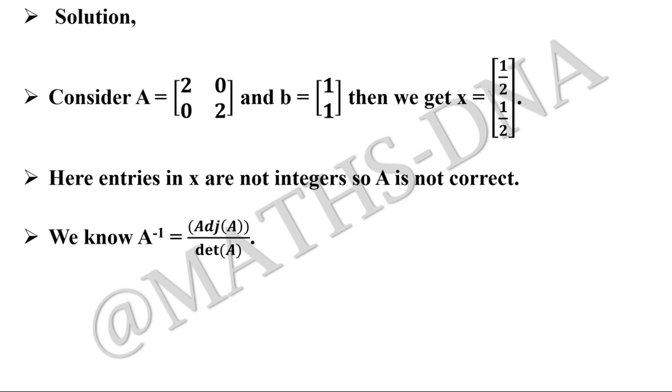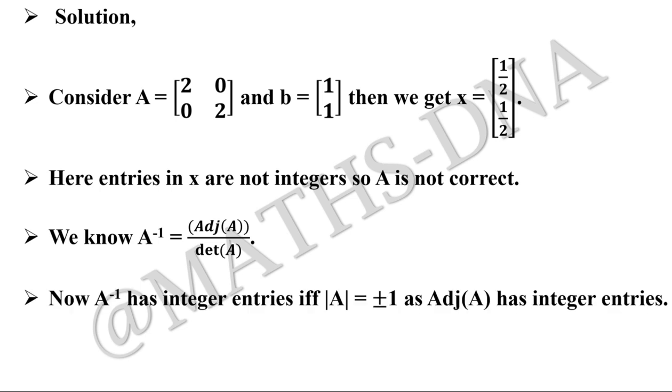Moving on to the second one, we know that A inverse is nothing but adjoint of A upon determinant of A. And as A inverse has integer entries if and only if determinant of A is plus minus 1, and as adjoint of A is also having integer entries, the second statement will be correct. So the correct answer is option B, second statement is only correct.